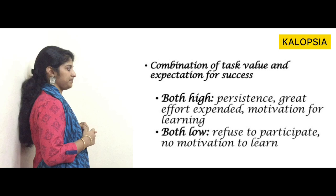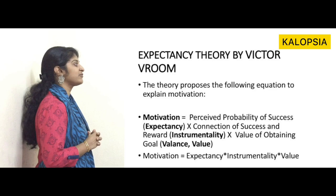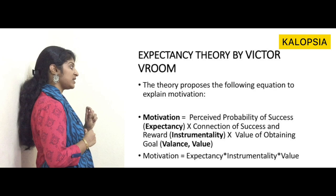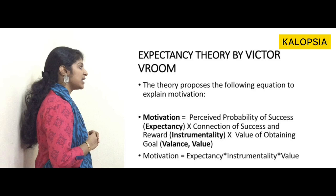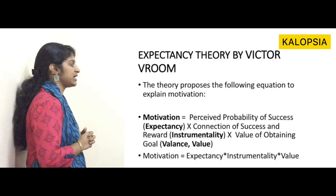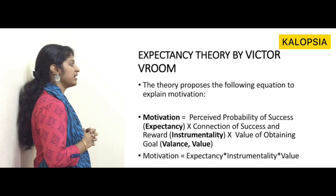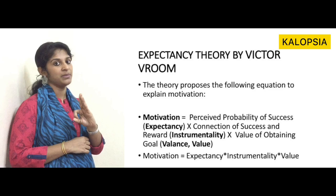The next expectancy theory is by Victor Vroom. It proposes the following equation: Motivation equals perceived probability of success (expectancy) multiplied by the connection of success and reward (instrumentality) multiplied by the value of obtaining the particular goal (valence). In short, motivation equals expectancy times instrumentality times value.